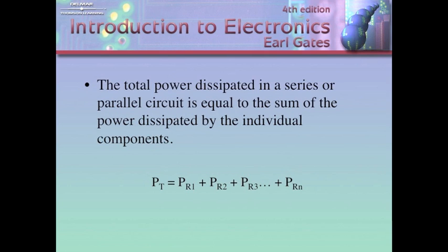The total power dissipated in a series or parallel circuit is equal to the sum of the power dissipated by the individual components. So this formula applies series and parallel. This is the only formula you need to know about power. Power is always additive. We simply need to add it up, and that will give us our totals.